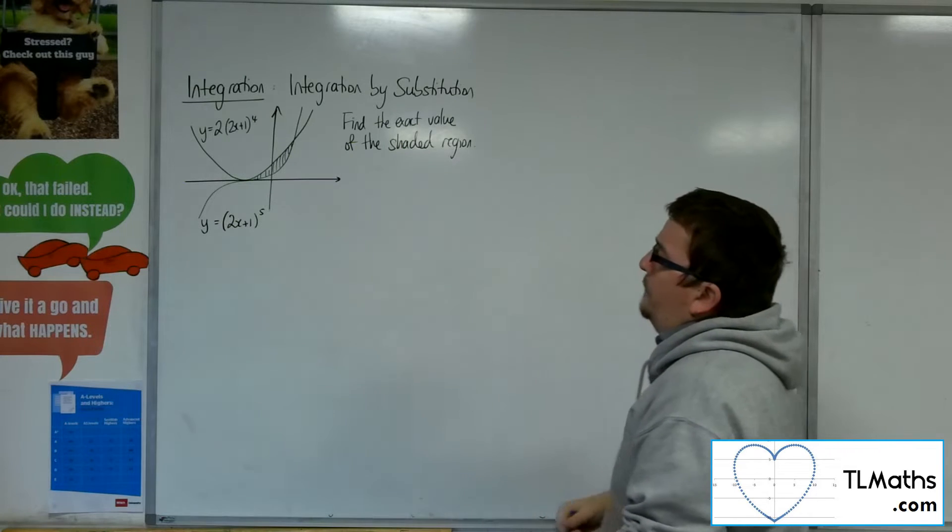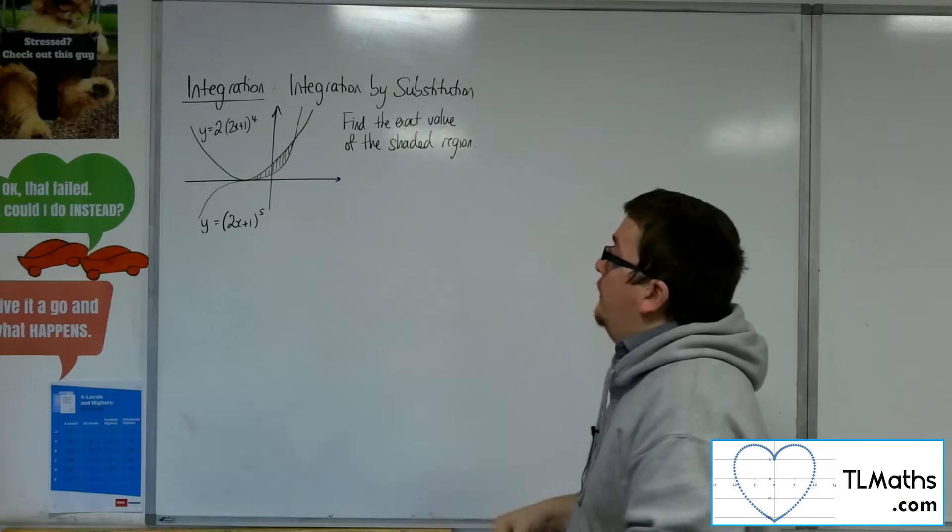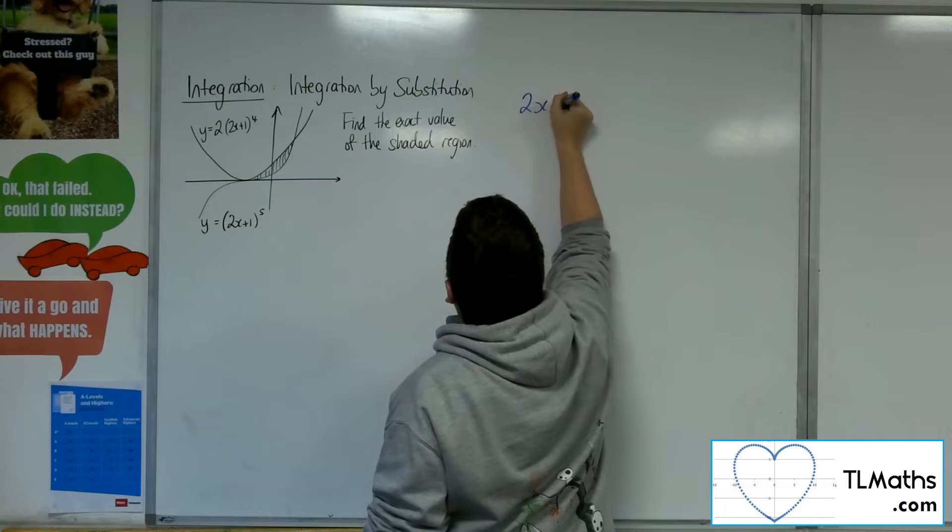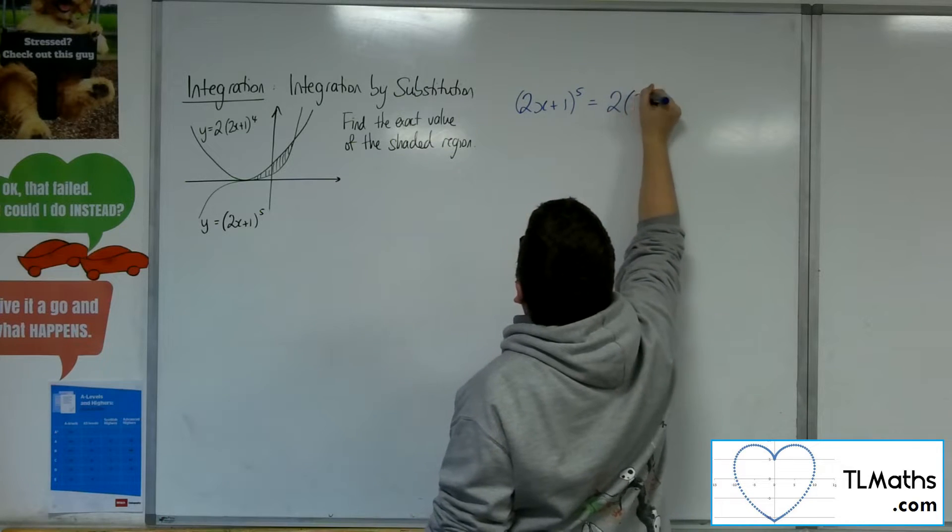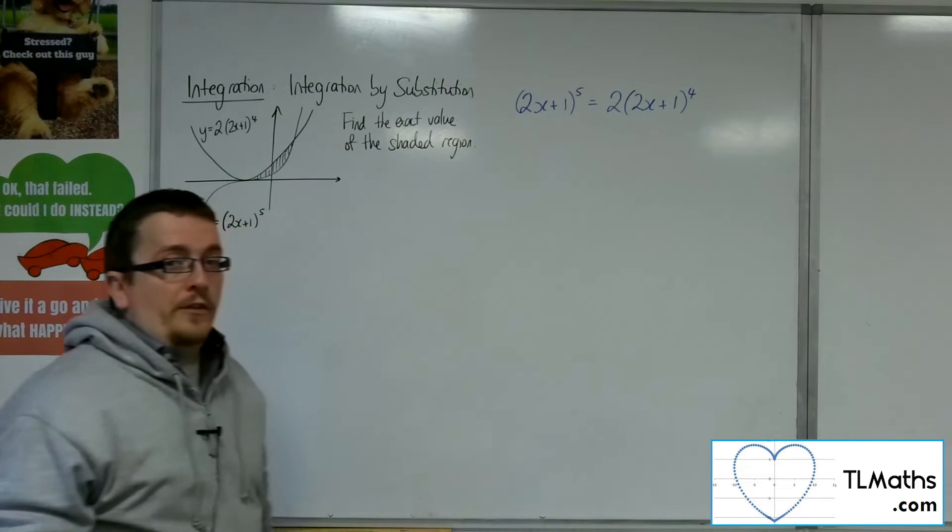So first thing that we really want to do is to figure out where these two curves intersect. So we're going to put one equal to the other, so 2x plus 1 to the 5, and the 2 lots of 2x plus 1 to the 4. So we want to solve this equation.